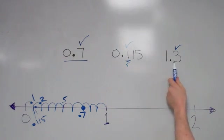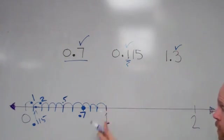Lastly, 1.3 means I'm going to go to the 1, and I need to cut the distance from 1 to 2 into 10 equal-sized pieces.